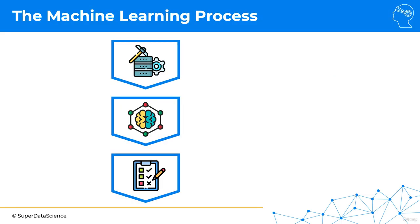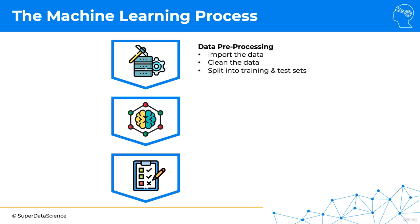This process has three main steps. The first one is called data pre-processing, and here we import the data, we clean the data, and we split the data into training and test sets.